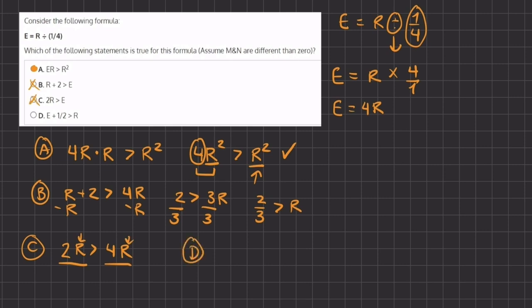Now let's move on to D. D states that E, which is 4R, plus 1/2 is greater than R. Now let's subtract R on both sides and we can subtract this 1/2 on both sides, and we are left with 3R is greater than negative 1/2. Now we can divide 3 on both sides and we are left with R is greater than negative 1/6.